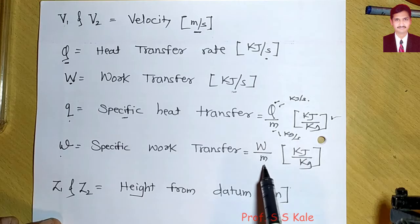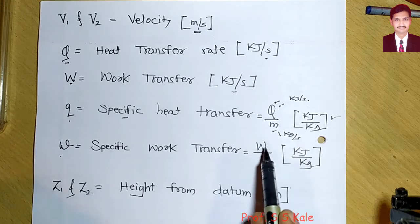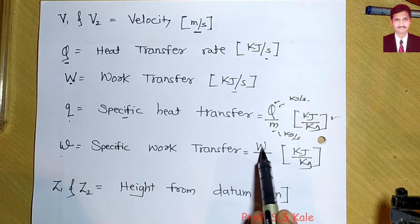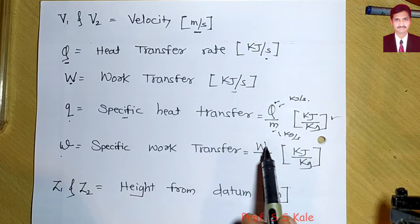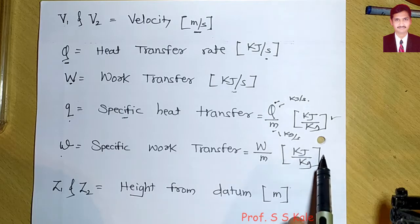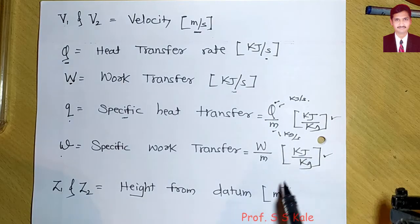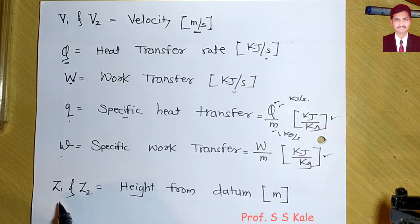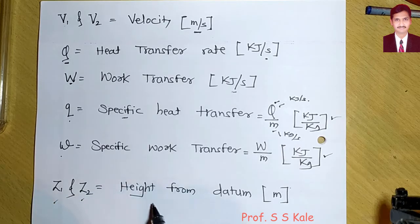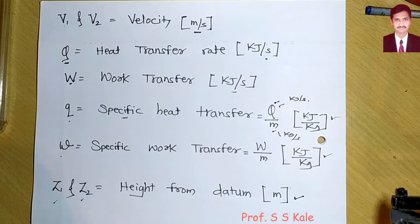Similarly, specific work transfer small w equals capital W divided by mass m, giving units of kJ/kg. z1 and z2 are heights at inlet and outlet from the datum, measured in meters.